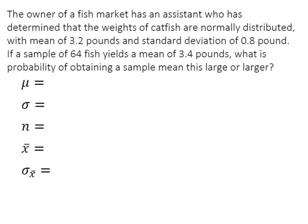Now we're going to get the information out of the problem that we need to plug into Minitab. So the population mean was given as 3.2 pounds. You have a population standard deviation of 0.8 pounds and an n of 64. We're looking for the probability of finding a sample mean x-bar of 3.4 pounds or larger.